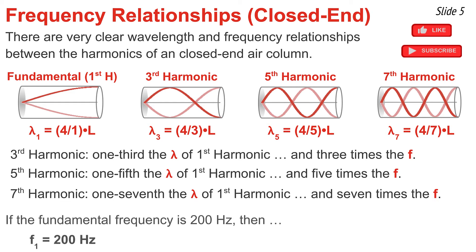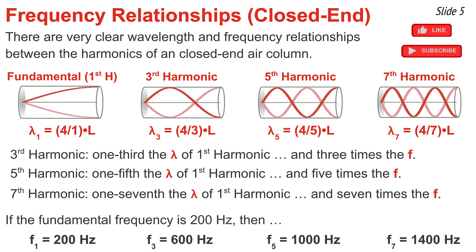Knowing this equation, I can calculate the frequency of any harmonic if I know the frequency of the first harmonic. For instance, if the frequency of the first harmonic is 200 hertz, then the frequency of the third, fifth, and seventh harmonic would be three times 200, five times 200, and seven times 200 hertz.